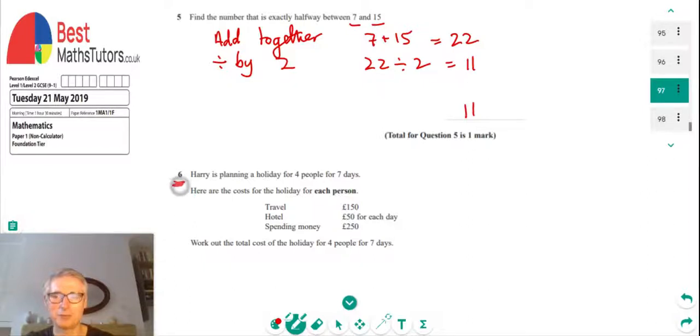Question 6 now. We've got Harry is planning a holiday for four people for seven days. And these are the costs for each person. We've got travel is 150, the cost of a hotel for each day is 50, and the cost of spending money for the total holiday is 250. We've got to work out the cost for four people for seven days.